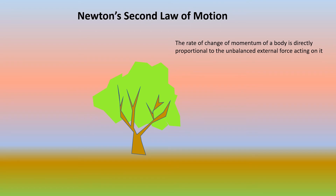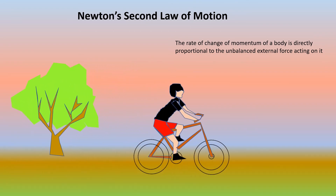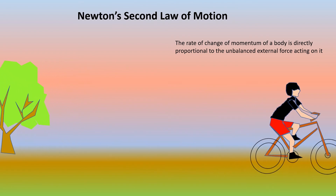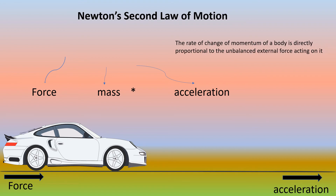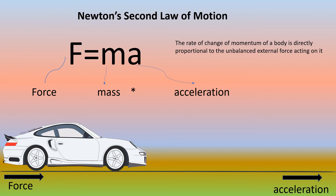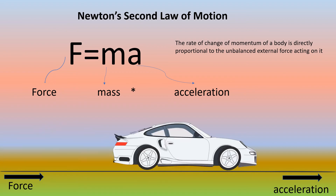Riding a bicycle is a good example of Newton's second law of motion at work. The bicycle is a mass, and your leg muscles pushing on the pedals is a force. Newton's second law of motion says that acceleration happens when a force acts on a mass. So force equals mass times acceleration: F = ma.